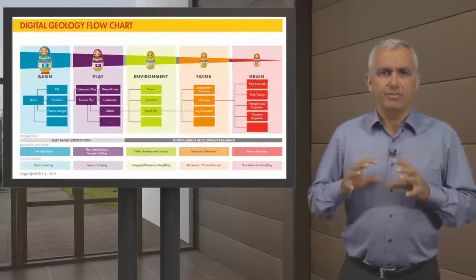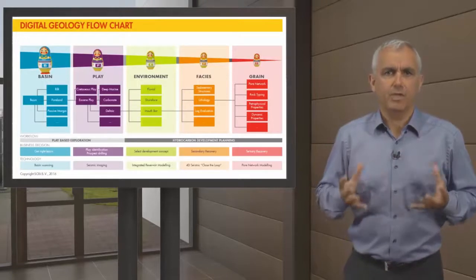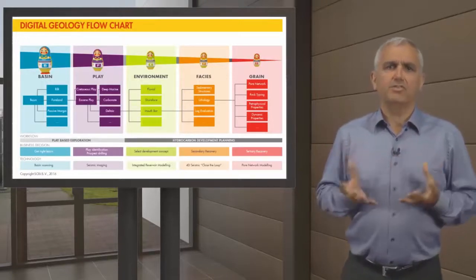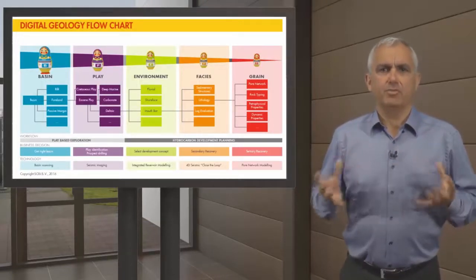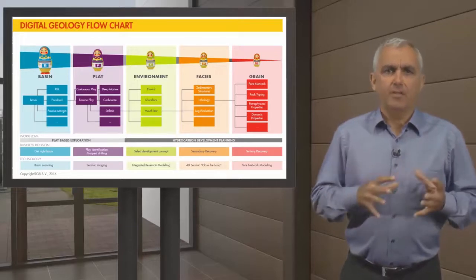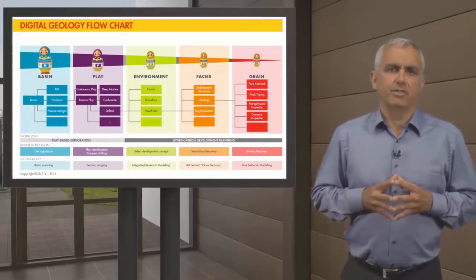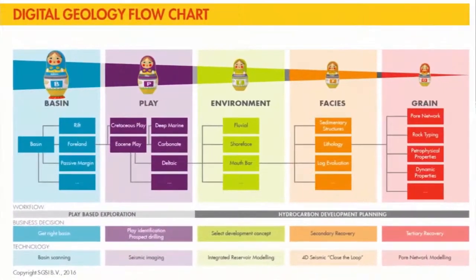Digital Geology facilitates communication and collaboration around key decisions in complex upstream projects, while linking them to subsurface characterization. This is done in five different scales, which represent how nature is organized and how decisions are made in the upstream business. These scales are Basin, Play, Environment, Facies, and Grain.